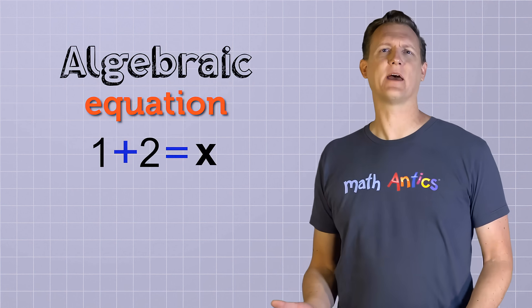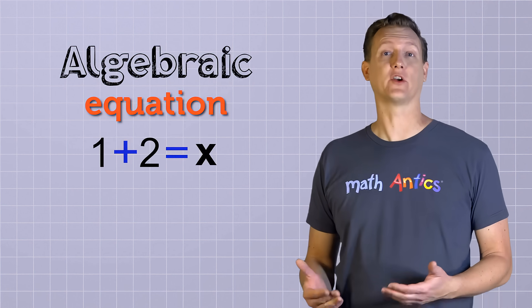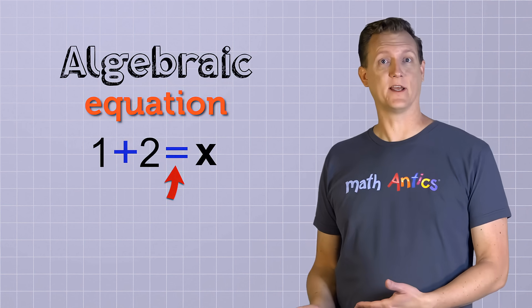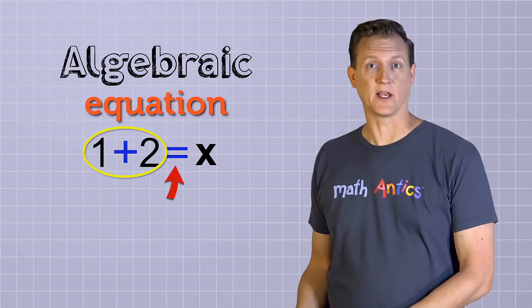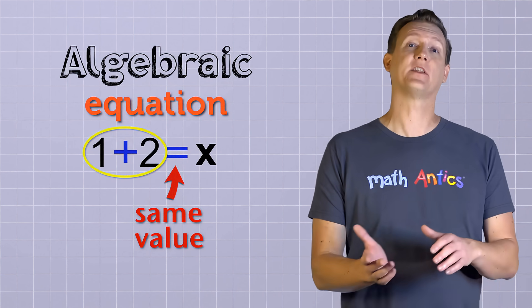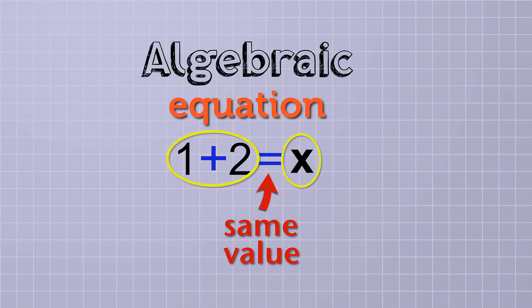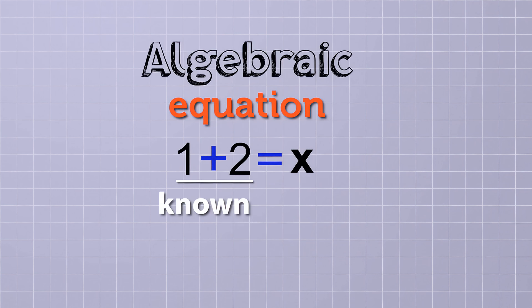So in arithmetic, we would just leave the problem like this: 1 plus 2 equals blank and we'd write in the answer when we did the addition. But in algebra, we'd write it like this: 1 plus 2 equals x. The x is a placeholder that stands for the number that we don't know yet. What we have here is a very basic algebraic equation. An equation is just a mathematical statement that two things are equal. An equation says the things on this side of the equal sign have the same value as the things on the other side of the equal sign. In this case, our equation is telling us that the known values on this side are equal to what's on the other side, which happens to be the unknown value that we're calling x.